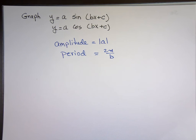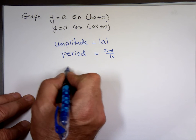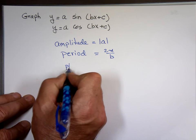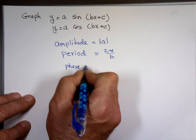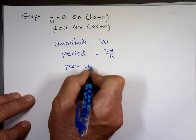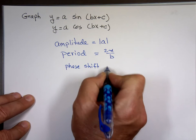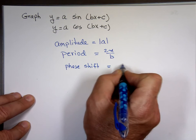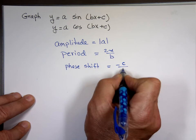Then what does C do? Phase shift — exactly — or displacement. Which is negative C over B.